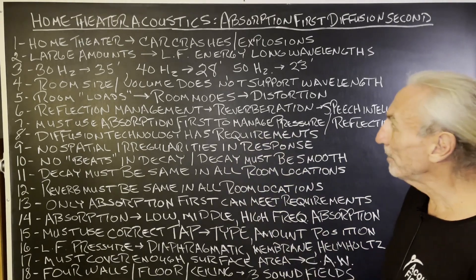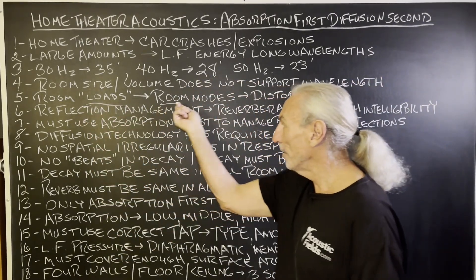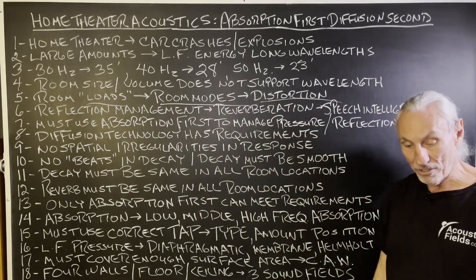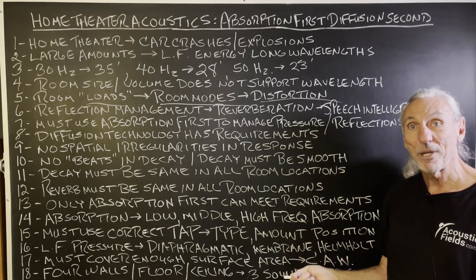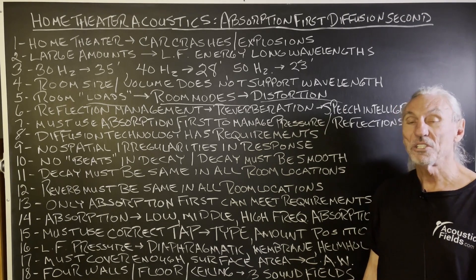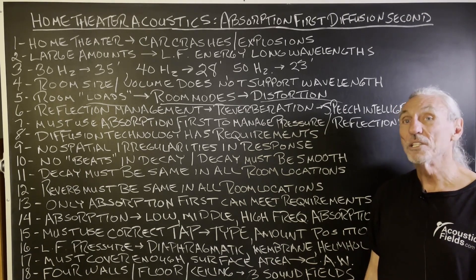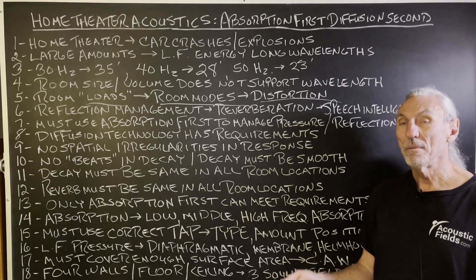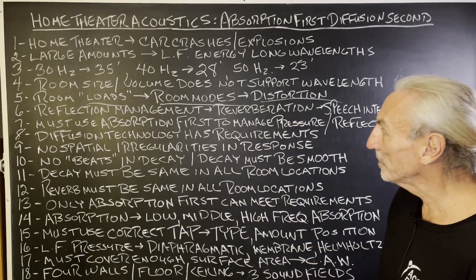When that happens, the room loads, and when it loads you get room modes, which is distortion. That distortion can exaggerate certain frequencies or attenuate them to the point where you don't hear anything at all. 60 cycles is a big one we see a lot in listening environments — it seems to be a problematic frequency, mainly due to ceiling heights.